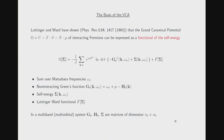The basis of the variational cluster approximation is a famous paper by Luttinger and Ward, who showed that the grand canonical potential of an interacting fermion system can be expressed as a functional of the self-energy. You have a sum over Matsubara frequencies, the non-interacting Green's function, and the self-energy. In a multi-band system, the Green's functions and self-energies are matrices of dimension equal to the number of bands.